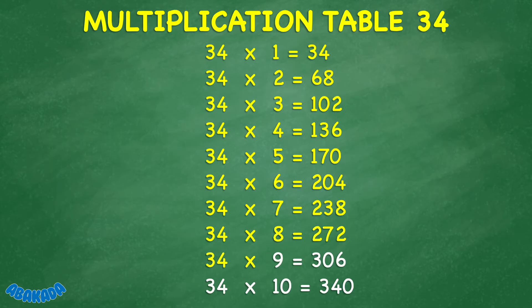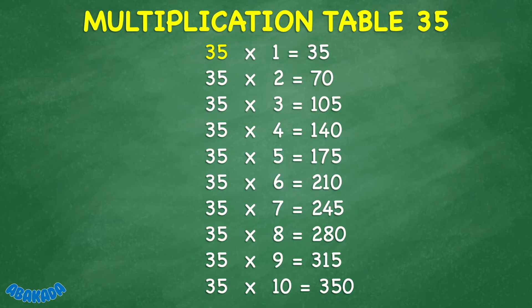34 times 9 equals 306. 34 times 10 equals 340. 35 times 1 equals 35. 35 times 2 equals 70. 35 times 3 equals 105.